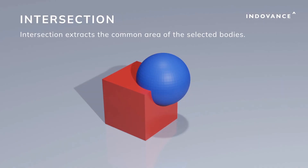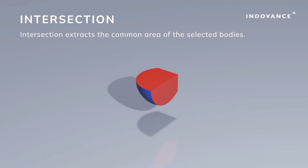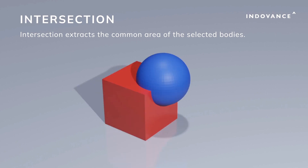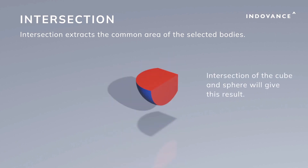Intersection extracts the common area of the selected bodies. Intersection of the cube and sphere will give this result.